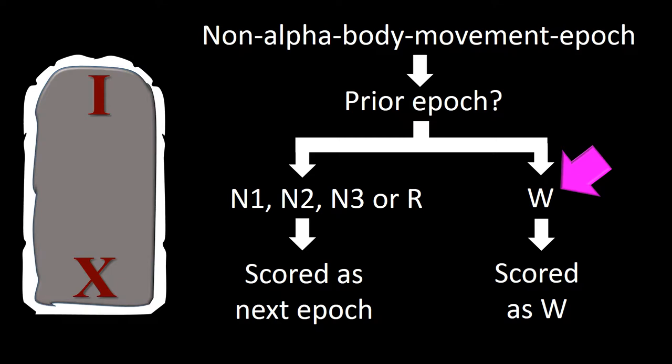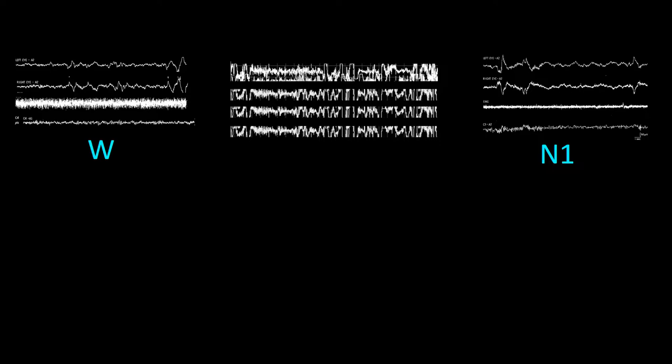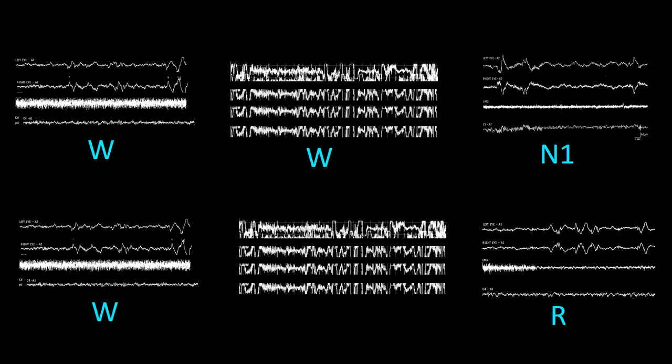The second arm of the flowchart addresses how to score a non-alpha body movement epoch when the prior epoch is W: the epoch in question should be scored W. For example, if the preceding epoch is W and the following epoch is N1 or R, the epoch in question is still scored W.